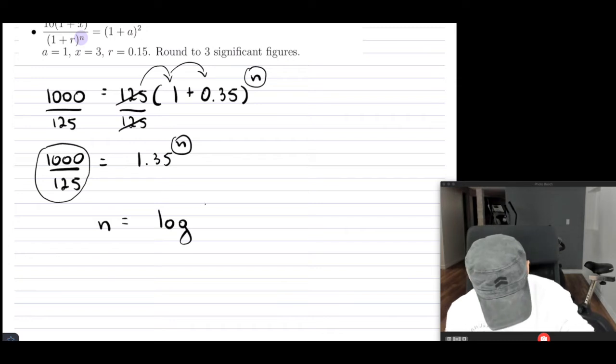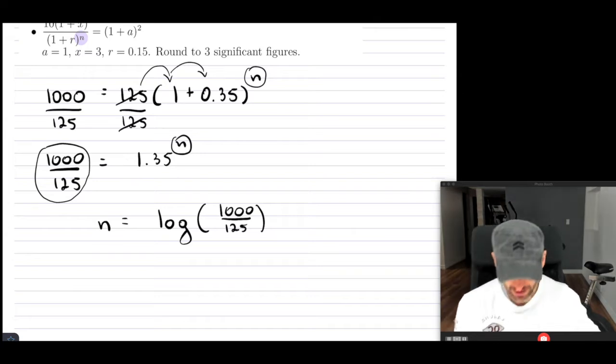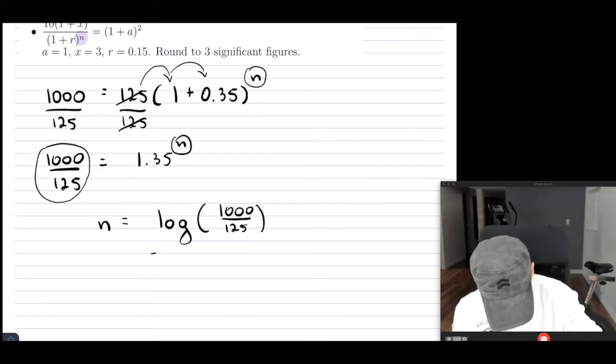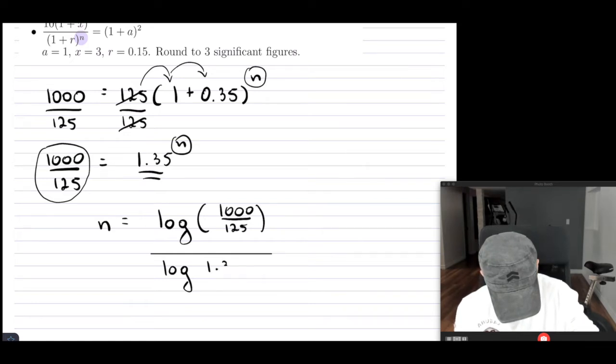Now, if you want an introduction to log and maybe some other examples and the reason why we use log to solve for an exponent, I'm going to put a link up above for you. So you can do that. Now, when we are at this particular point, in order to solve for this unknown N, we're going to have N equals to. So what you do is you take log of your answer, whatever your answer here is. So 1,000 divided by 125.